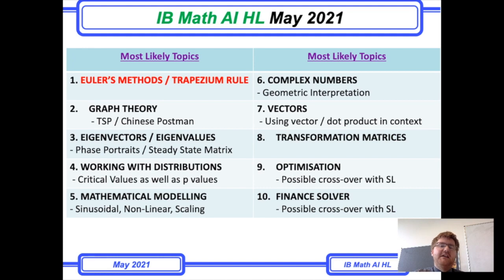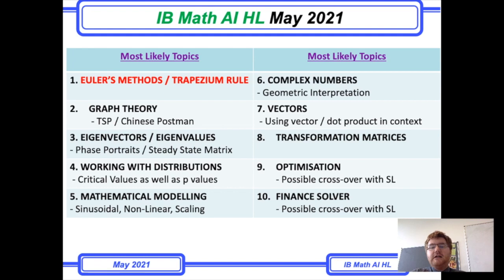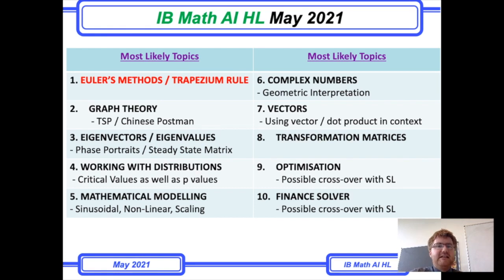My last two topics — optimization and finance solver questions — are probably the crossover topics most suitable between standard level and higher level. Make sure you can work out the maximum or minimum area of something using differentiation and double derivatives. With a finance solver, make sure you know how it works: what does N stand for, what does PY stand for, what does PMT stand for? I give that recommendation also in the standard level predictions.